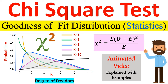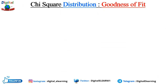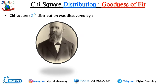This short animated video explains the basic concept of chi-square distribution, also known as the goodness of fit distribution in statistics. The concept is explained with relevant examples. Chi-square distribution was first described by German statistician Frederick Robert Helmert in 1875.